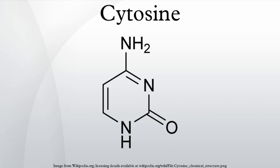In Watson-Crick base pairing, it forms three hydrogen bonds with guanine. Cytosine was discovered and named by Albrecht Kossel and Albert Newman in 1894 when it was hydrolyzed from calf thymus tissues. A structure was proposed in 1903, and was synthesized in the laboratory in the same year.